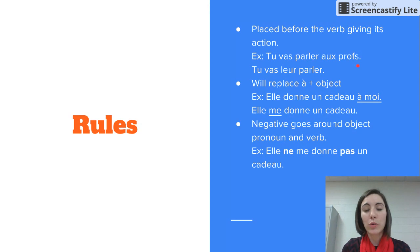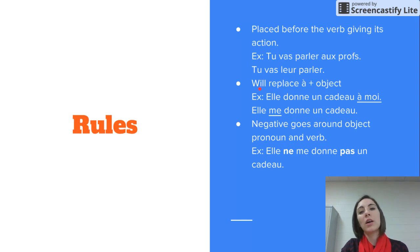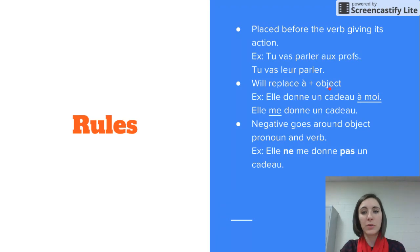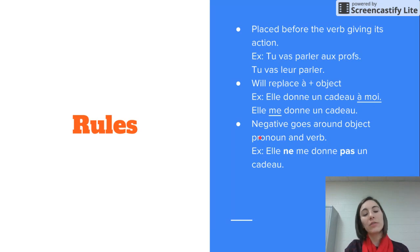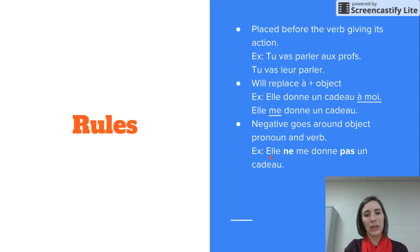Remember that à can appear as à, au (A-U), or aux (A-U-X) in the plural. Our indirect object pronouns replace à plus an indirect object. So elle donne un cadeau à moi becomes elle me donne un cadeau, replacing à moi with me. For negation, just like with reflexive and direct object pronouns, ne...pas goes around the object pronoun and the verb: elle ne me donne pas un cadeau.